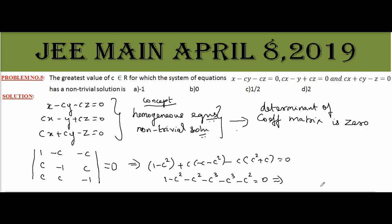That is 1 minus c square minus c square minus c cube minus c cube minus c square equal to 0. So it will be 1 minus 3c square minus 2c cube equal to 0.